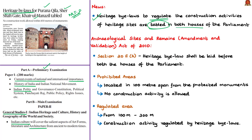First, let us understand what is meant by a bylaw. In general context, a bylaw means a rule or law established by an organization or local community to regulate them. A bylaw is created as per the provisions given by some higher authority for the purpose they intend to create that bylaw.